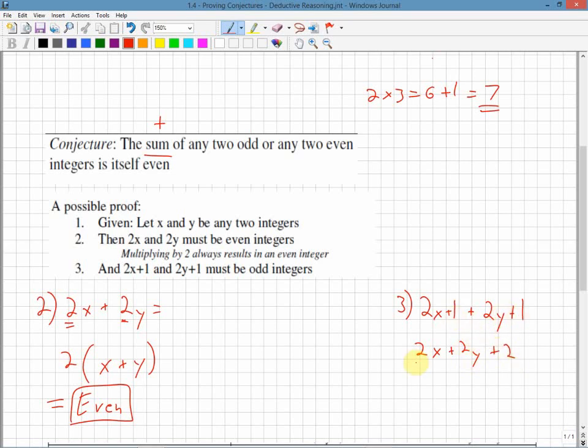I can see again that I have a 2 common between everything. So I have 2. I'm left with x plus y plus 1. Because I'm multiplying by 2, again, it doesn't matter what I'm multiplying by. This number inside the brackets could be anything. I mean, we already know they're integers because we stated x and y are integers. But as long as I'm multiplying by 2, the result, again, is going to be even. Great.